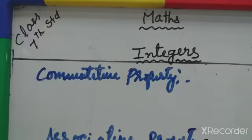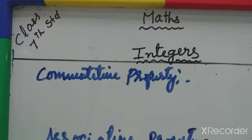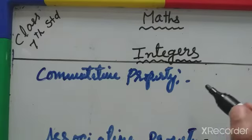Commutative property is most of the time used with a binomial, and associative property is used with a trinomial. Distributive property means distributing the left-hand side number. Commutative property means just reversing numbers, letters, or variables.